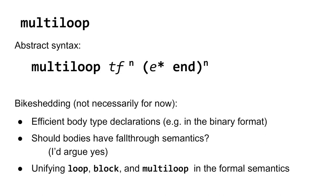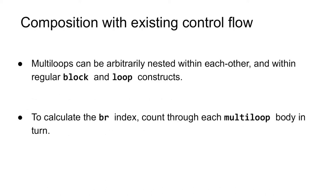There are some relatively uninteresting design questions which we'd have to solve in a full proposal — things like what's the binary format, do bodies have fall-through semantics, and general editorial questions of how to update the formal semantics with multi-loop. I mentioned previously that we'd want multi-loop to compose with existing control flow constructs. Since the mechanism we're using to transfer control between multi-loop bodies is just the existing BR instruction, this actually falls out very neatly. Multi-loop can be arbitrarily nested with the existing block and loop constructs, and the de Bruijn indexing of the BR instruction simply counts each consecutive body of an enclosing multi-loop as a separate index.